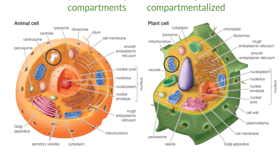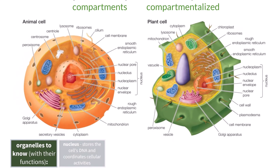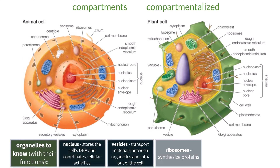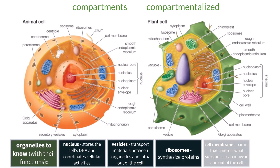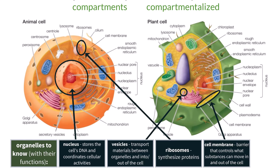A few examples of organelles that you need to know are the nucleus, vesicles, ribosomes, and the plasma membrane. Each of these components occupy a specific space within the cell and have their own unique functions, as listed here.